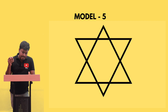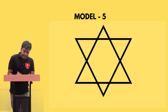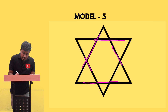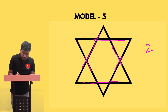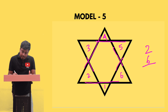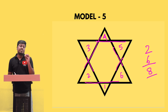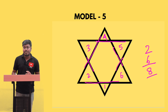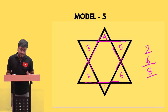For the first type of star, our target is to find how many triangles are there. First, let me target the outermost triangles — there are two of them. Next are the inner triangles: one, two, three, four, five, and six. So totally there are six inner triangles. Six plus two equals eight.